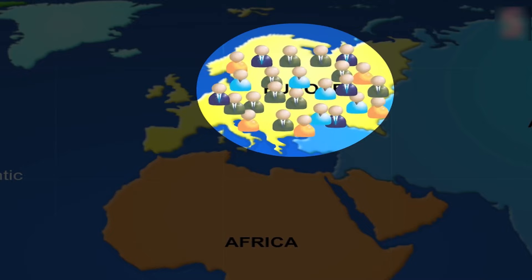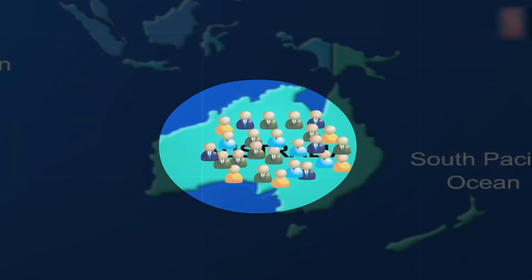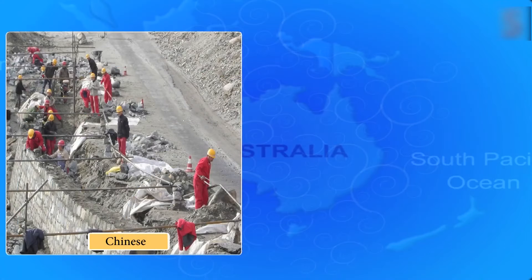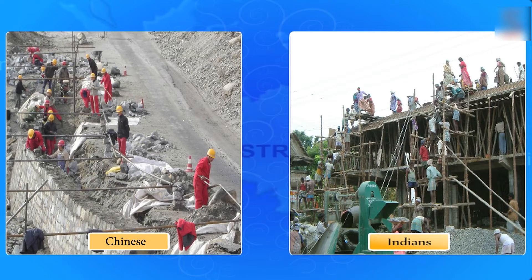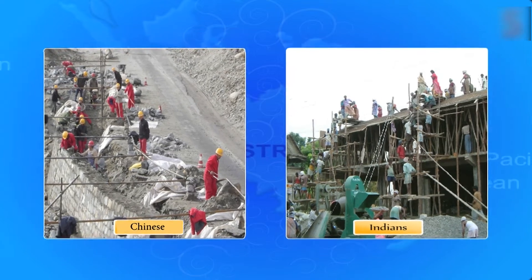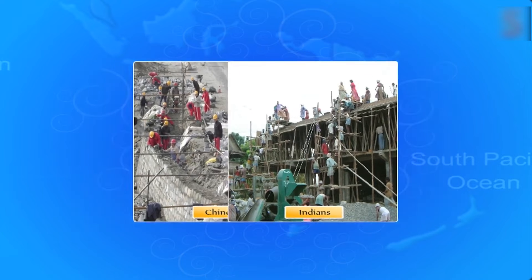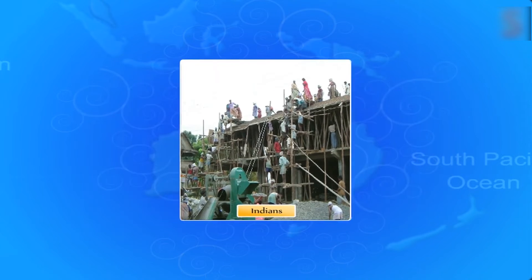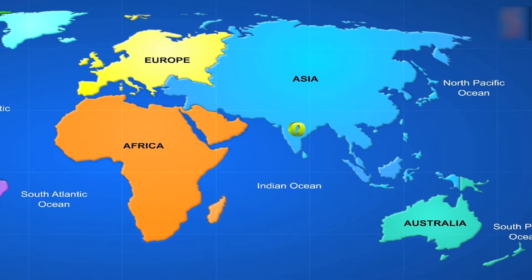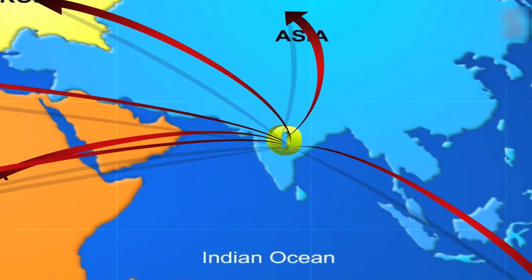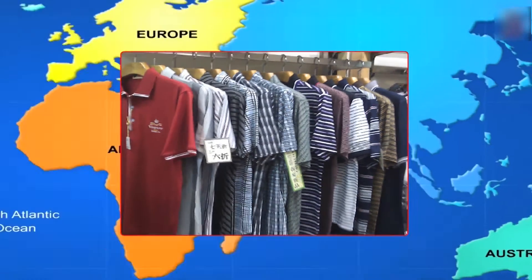International migration was common even back then. It is estimated that over 50 million people emigrated around Europe to America and Australia. A large number of Chinese and Indian laborers went to work on plantations, in mines, and in construction businesses around the world as part of the colonial plan. Zero traveled from India to the rest of the world, and Western clothes came to India.